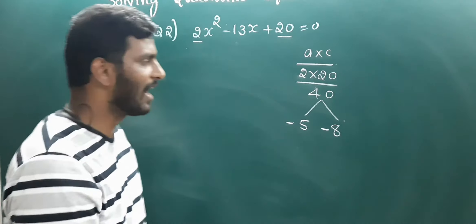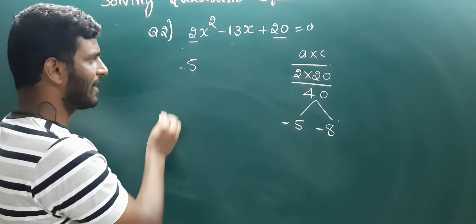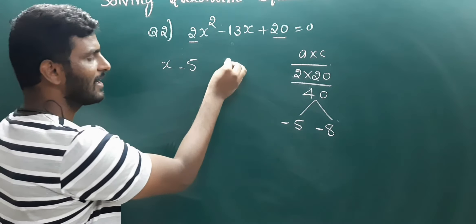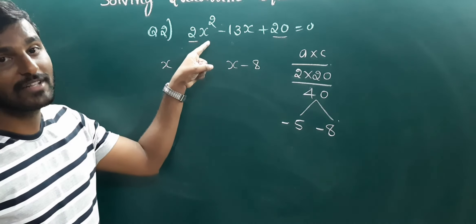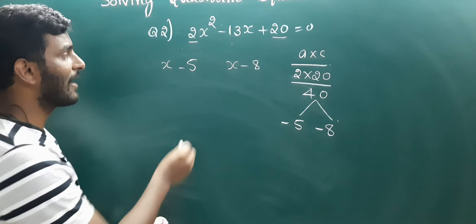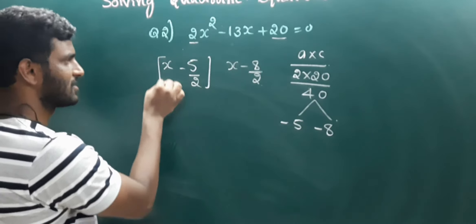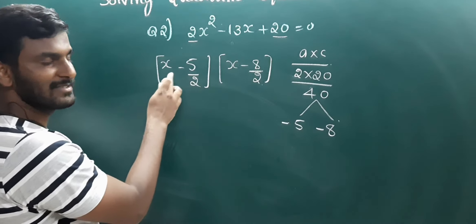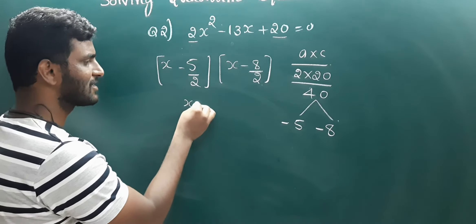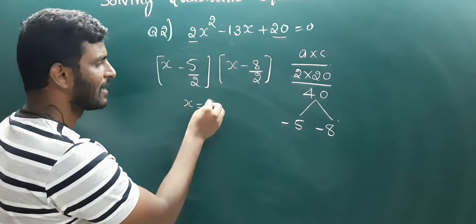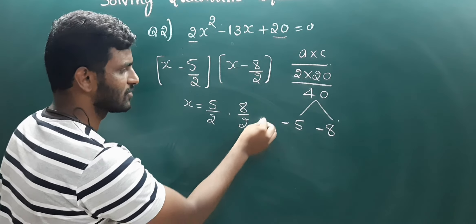Hence the factors are very simple: (x minus 5) and (x minus 8). But we have to observe that the coefficient of x squared is 2. Hence we have to divide by 2. So the two solutions are x equals 5 over 2 and x equals 8 over 2.